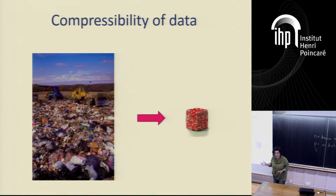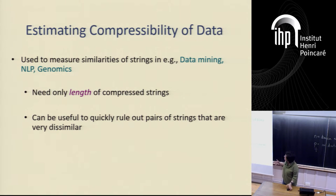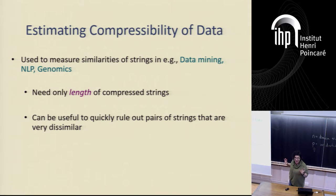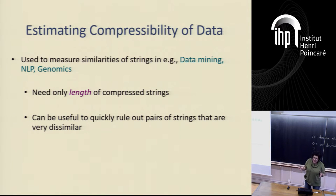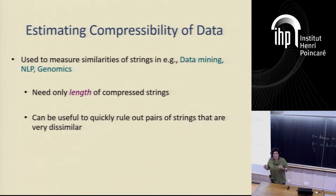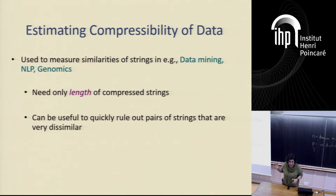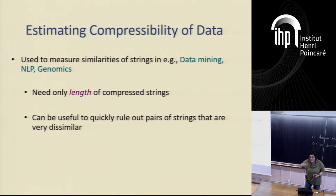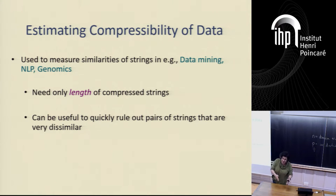What about estimating how compressible your data is? This kind of problem is used to measure similarities of strings. When we talk about estimating compressibility, we might be interested in additive or multiplicative estimates. For example, if you get a really quick estimate of compressibility of pairs together, that might give you a good way of ruling out pairs of strings that are very dissimilar. We should be open-minded about what we mean by approximation here — some notions might be the real answer, and some might just give us a good heuristic to get rid of a lot of computation quickly.